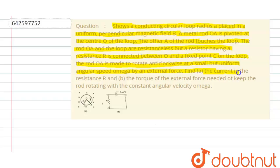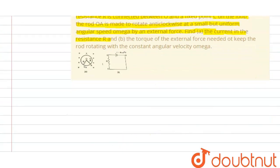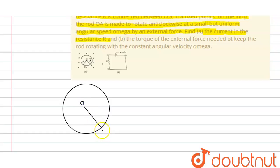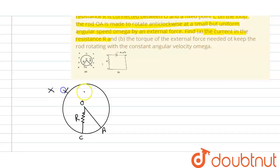In part A we need to find the current in the resistance R. We are given a circular loop with a rod pivoted at its center. Let's say the center is O, the outer end is point A, and point C is on the loop. The rod and loop are resistance-less, and the external resistance R is connected between O and C.